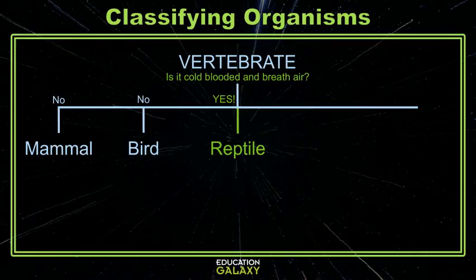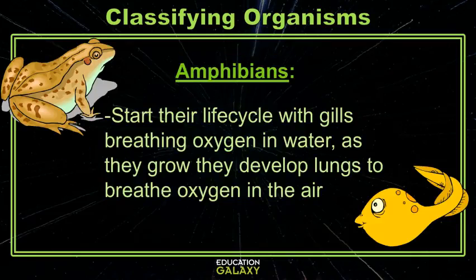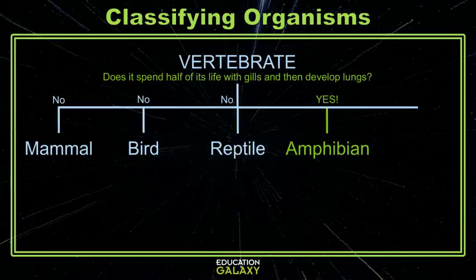Another class of animals is amphibians. These closely resemble reptiles with one big difference. At the start of their life cycle, they live underwater and breathe oxygenated water through gills. Then they change as they enter into adulthood and live on land and breathe air through lungs.